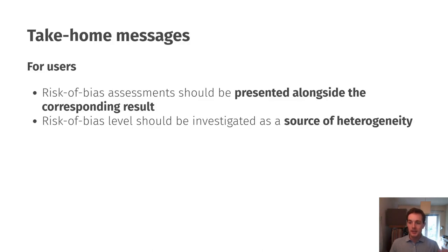A couple of take-home messages from our experience working on this. For users, the two key things are that risk of bias assessment should be presented alongside the corresponding result to make it easy for readers to know the quality of what's gone into meta-analysis. Secondly risk of bias level should be investigated as a source of heterogeneity between studies and it's often not, and it's often potentially one of the biggest reasons why you might get different effect estimates across studies.